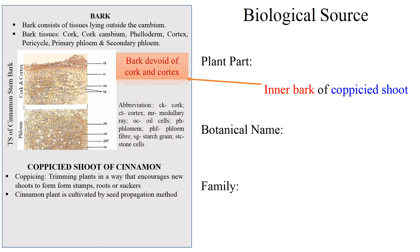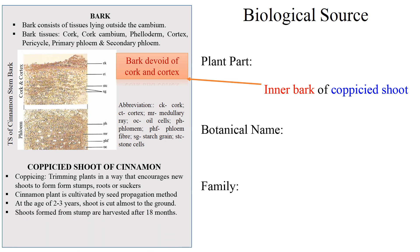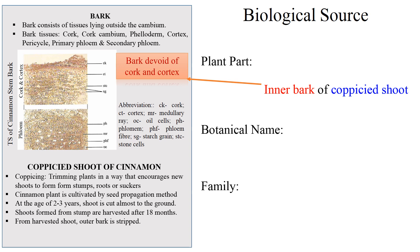In case of cinnamon, the plant is cultivated by seed propagation method. At the age of 2 to 3 years, the shoot is cut almost to the ground. Shoots formed from the stumps are harvested after 18 months. From the harvested shoot, the outer bark is stripped and then the inner bark is peeled and processed to obtain the inner bark of coppiced shoot.